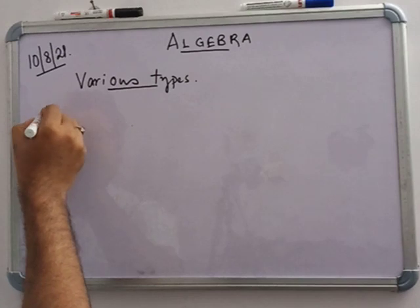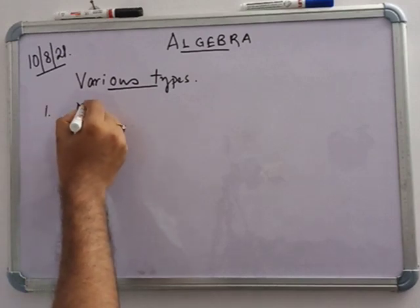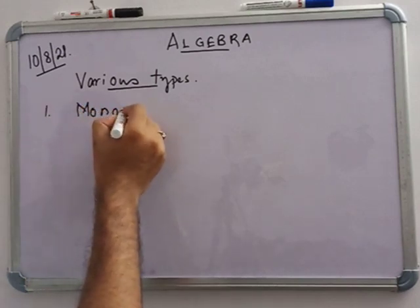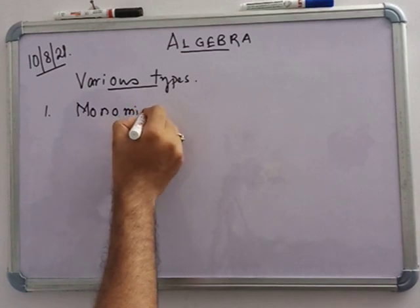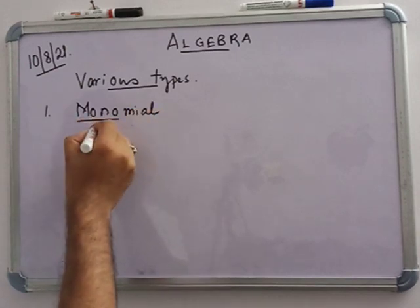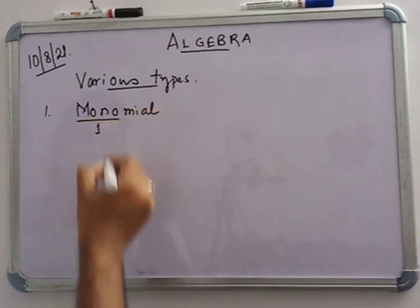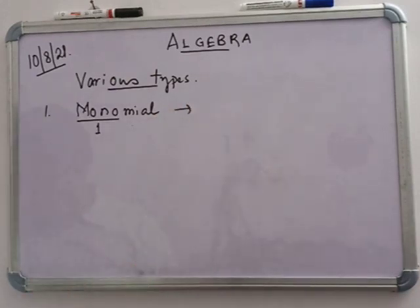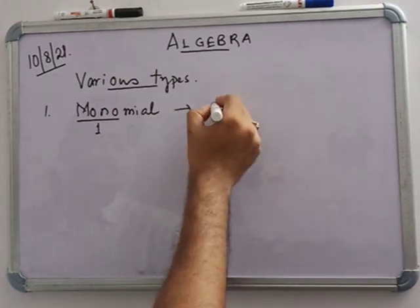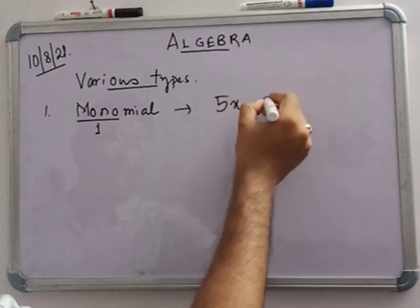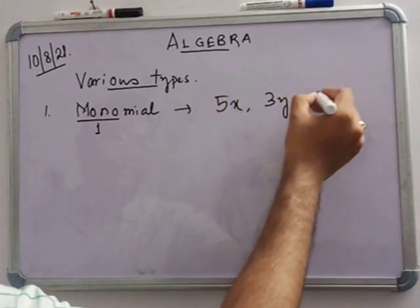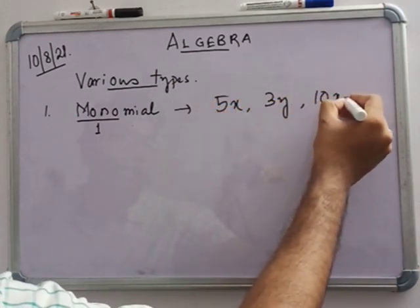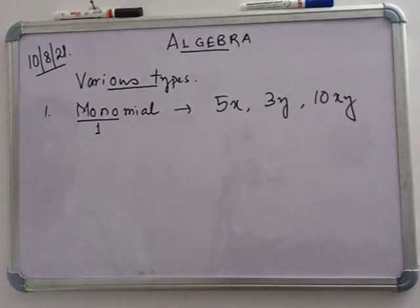Firstly, we are introducing monomial. What is the meaning of mono? Mono means one. So when an algebraic expression has one term — that is, 5x, 3y, 10xy — this type of expression is called a monomial.